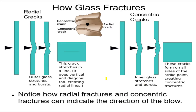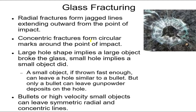So you can tell what kind of force caused what kind of crack. Also, if you know a crack is a concentric fracture, you know that the side the concentric crack is on was the side that was hit by the object. Radial fractures extend outward, whereas concentric fractures form in a circle. And obviously, large holes in glass are formed by large objects, while small holes are formed by small objects.